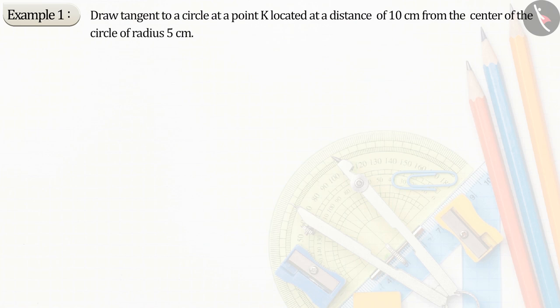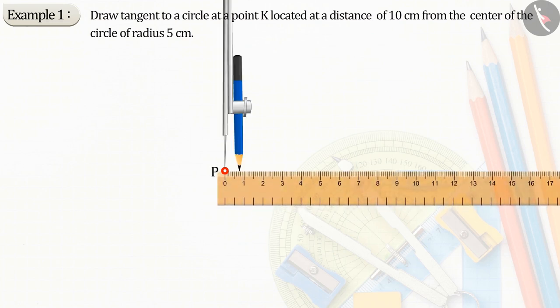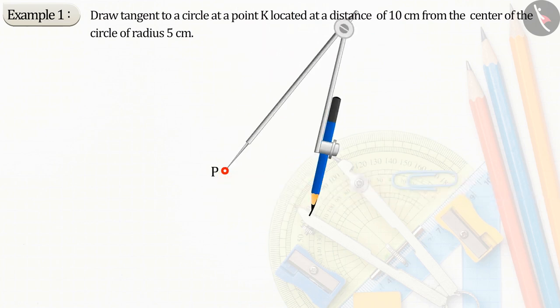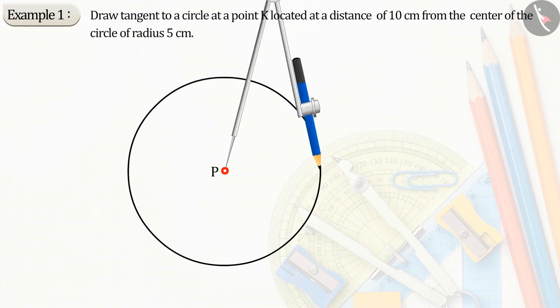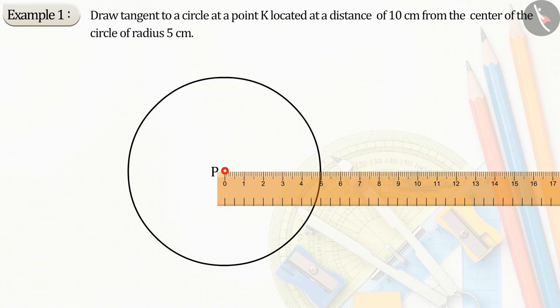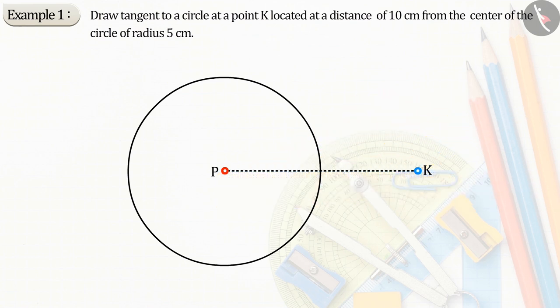First, consider a point P as center. Draw a circle of radius 5 cm. Now, let's take a point K at a distance of 10 cm from the center which gives the line segment PK.